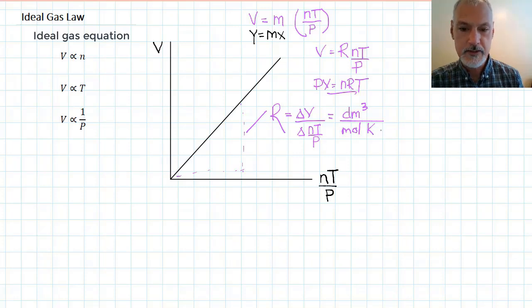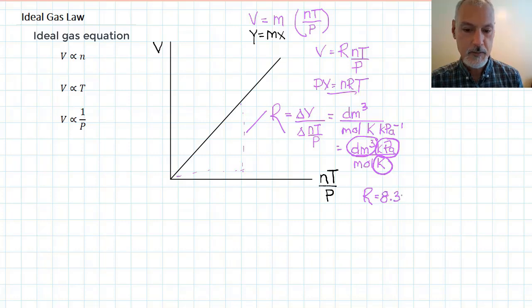and the units of pressure, one over pressure, would be kilopascals to the negative one. And bringing that negative one up top, we get units, then, of decimetres cubed, kilopascals, moles, and kelvin. And if we use these particular units, meaning that our volume is in decimetres cubed, our pressure has to be in kilopascals, and our temperature has to be in kelvin, then we get the value for r as being 8.31.